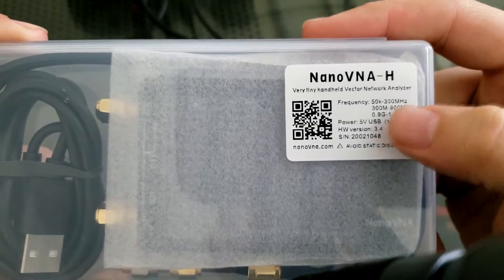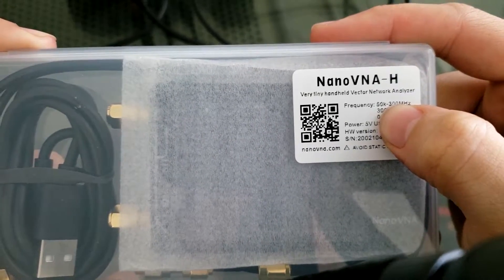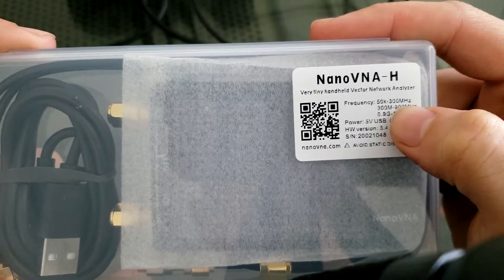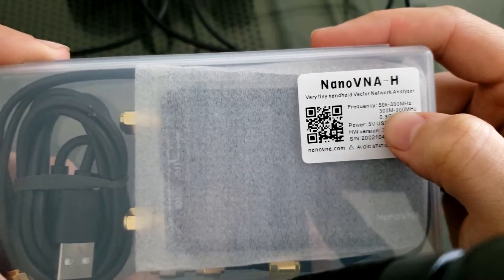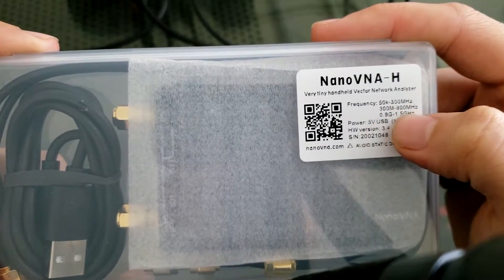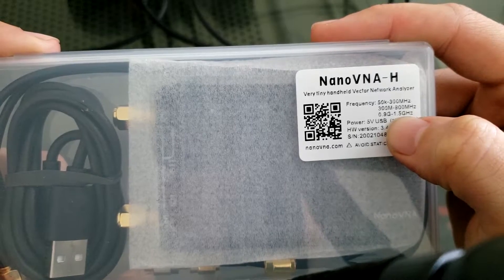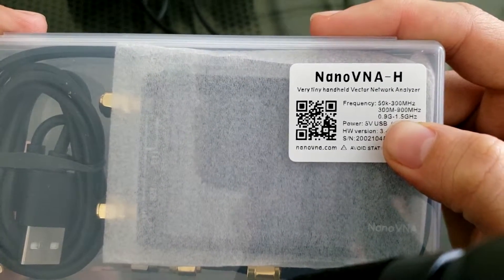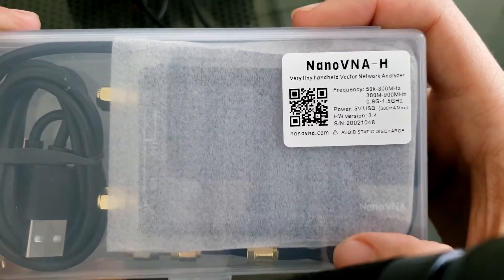The frequency range - a little stipulation here - the range is 50 kilohertz to 300 megahertz that is accurate at, but you can also try to test above 300 megahertz but you might not get as good accuracy. On this case it also says 0.9 gigahertz to 1.5.